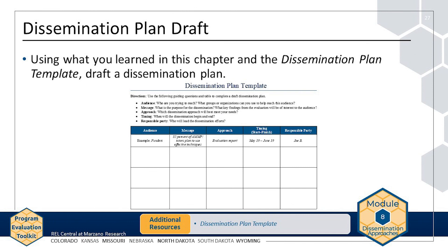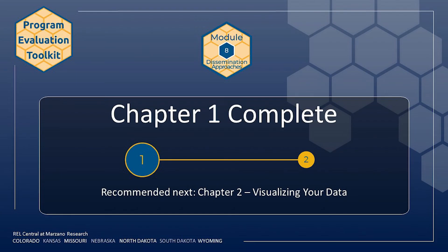Now it's your turn. Using what you learned, jot down some ideas for a dissemination plan. Think carefully about the audience you want to reach, the message you want to share, the approach that would best suit the message and meet your needs and the needs of the audience, and the timing of dissemination. The dissemination plan template, available on the resources page, can help you structure your thinking. This concludes Chapter 1 of Module 8. The next chapter of this module focuses on data visualization, or presenting your data in a visual form.